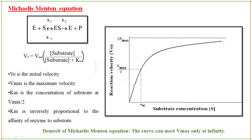There is a disadvantage to the Michaelis-Menten equation and plot: this plot is hyperbolic. After Vmax is reached, this curve will meet Vmax only at infinity because after some time the curve and Vmax are parallel to each other. Parallel lines meet only at infinity, so we will not get an accurate value for Vmax, and therefore not an accurate value for Km either, since half Vmax is what gives you Km. We need a linear graph for accurate values, and that is where Lineweaver and Burk come in.